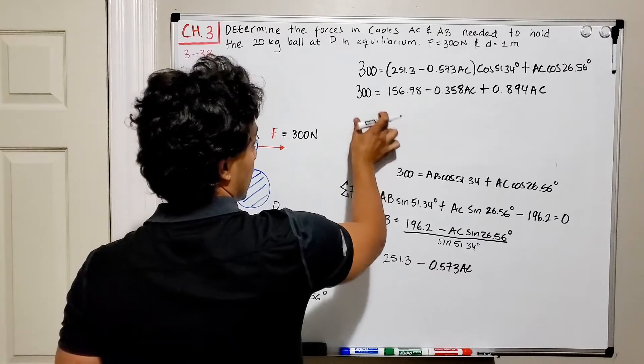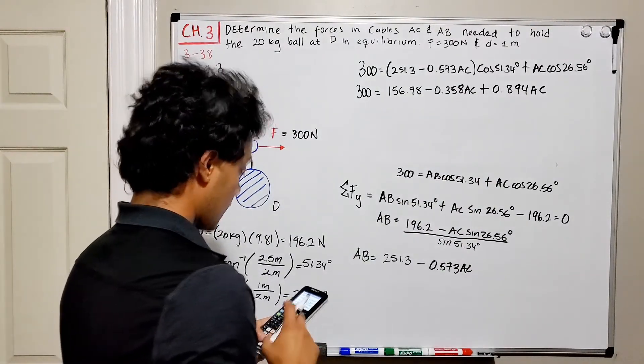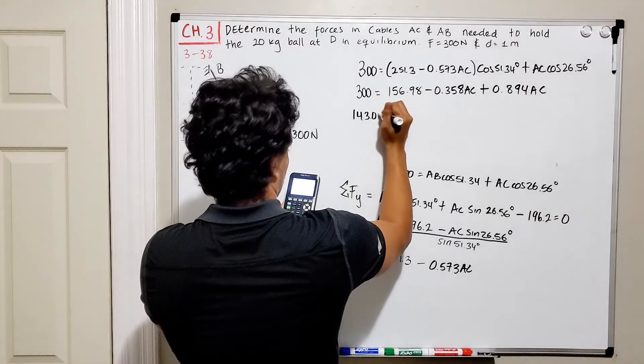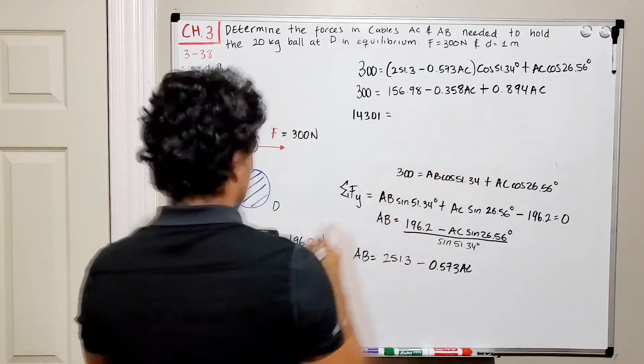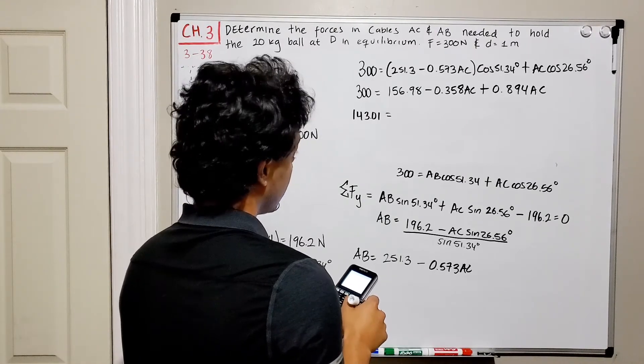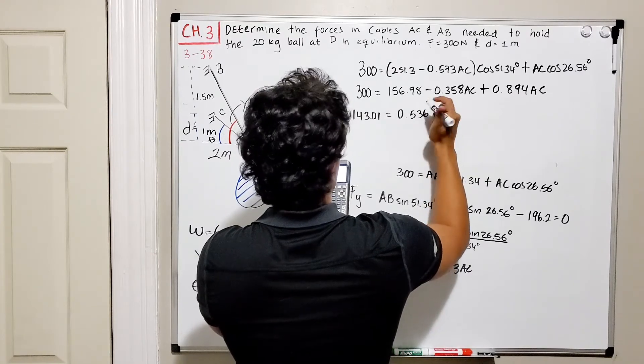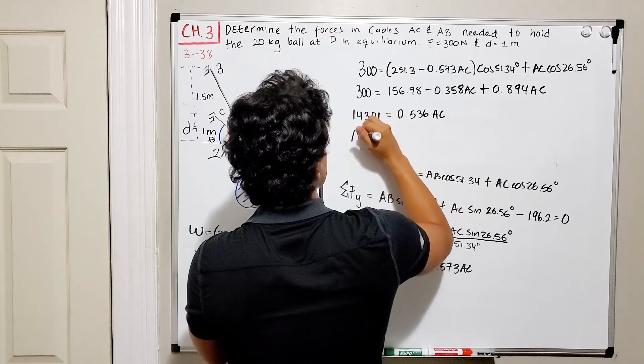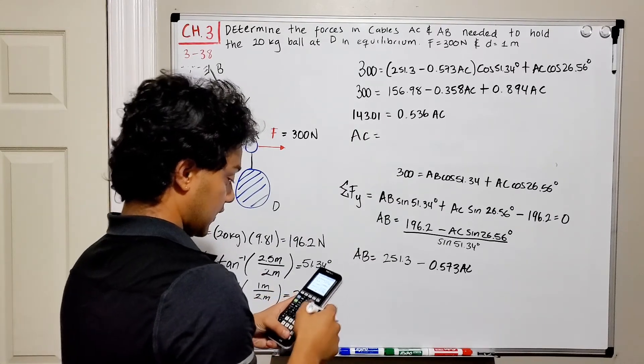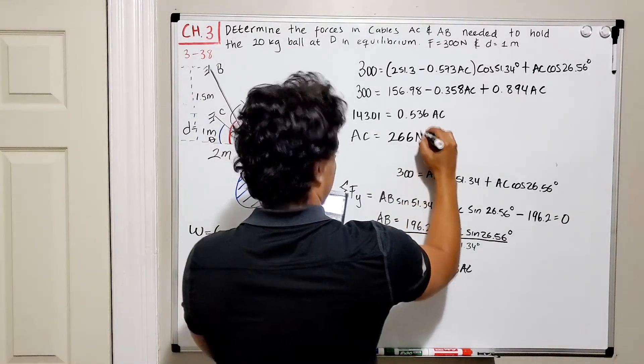So we pass this guy over to this side, and we add these two guys together. So we got 300 minus 156.98, this side becomes 143.01, equal to 0.894 minus 0.358, which is equal to 0.536 AC. And if we solve for AC, we get 143 divided by 0.536, and this is equal to 266 newtons.